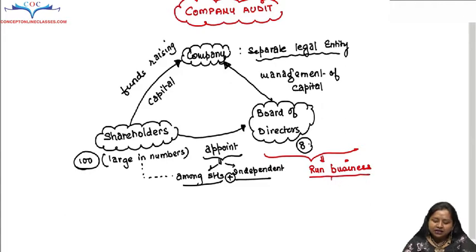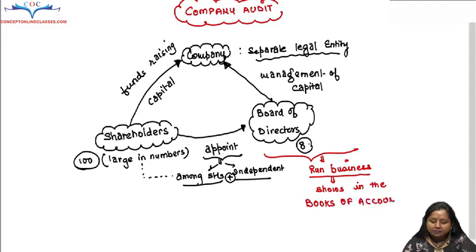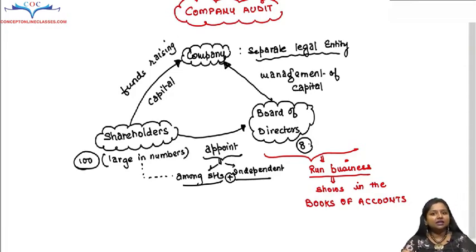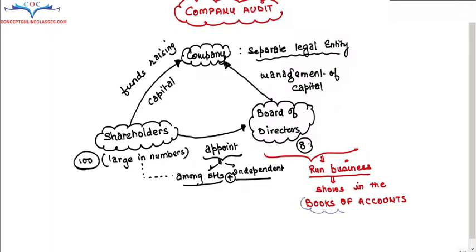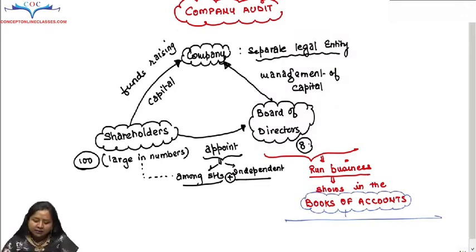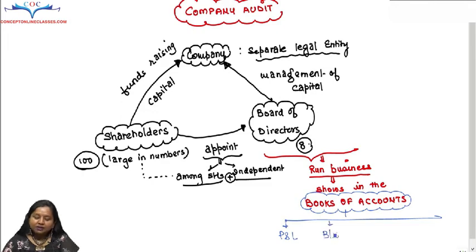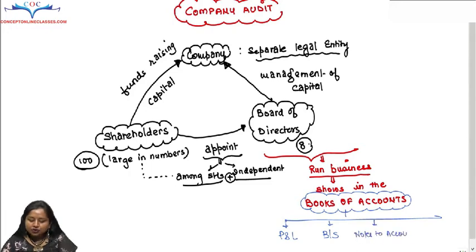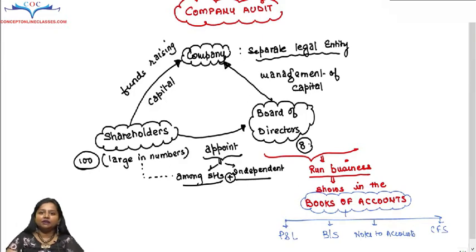Directors show the business operations in the books of accounts. A company maintains proper books of accounts in which the Board of Directors must transparently show to shareholders where and how the money contributed by all shareholders was spent. These books of accounts mainly contain four elements: one is the Profit and Loss Account, where revenue-nature expenses and income are recorded; another is the Balance Sheet, which shows capitalized assets and liabilities; third is Notes to Accounts, where notes on contingent liabilities etc. are given; and lastly the Cash Flow Statement, showing inflow and outflow of cash.